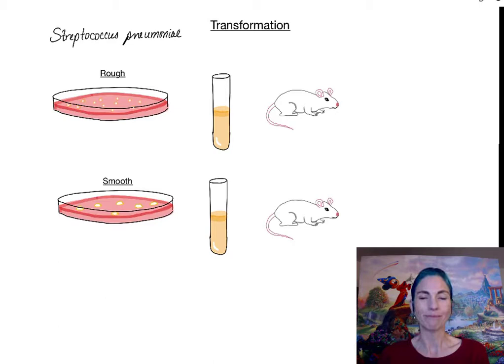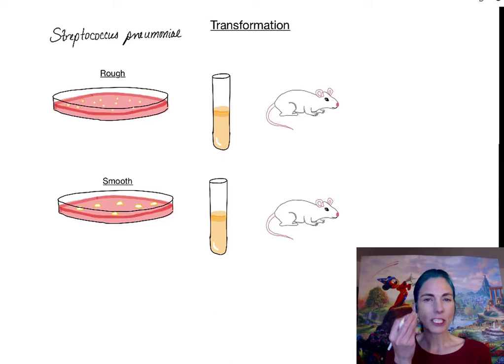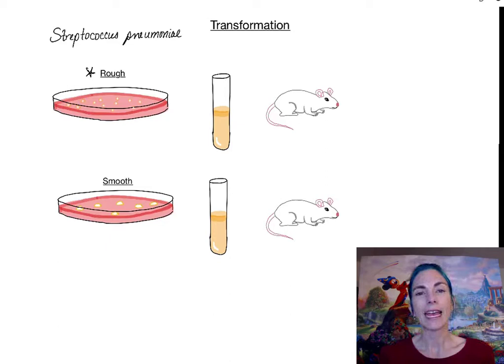As he was plating Streptococcus pneumoniae, he noticed there were two different colony types. Sometimes the colonies would be tight, small, and dry looking — he called those rough colonies. And sometimes they would be larger and more creamy or smooth — he called those smooth colonies.